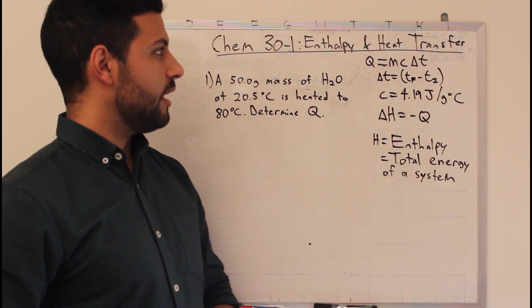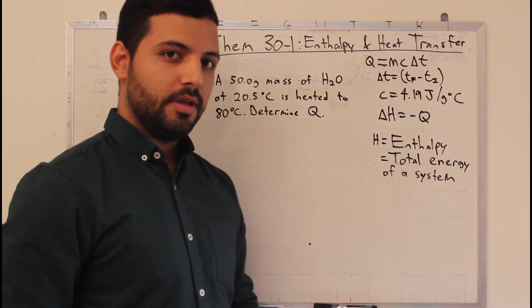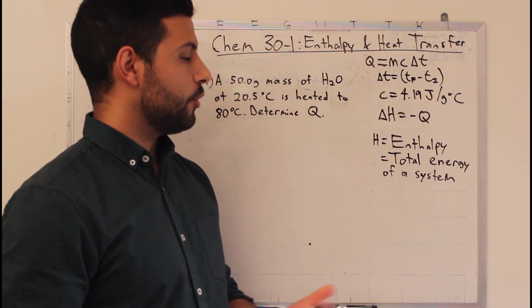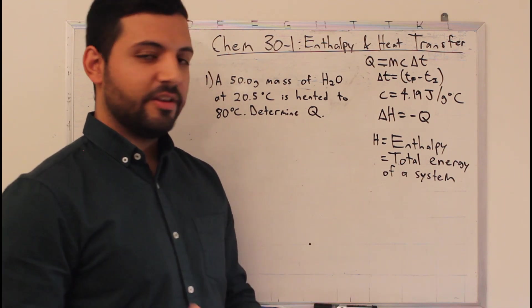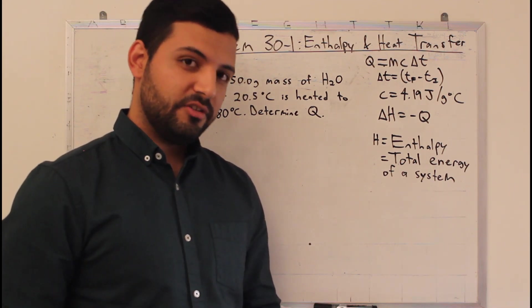In this lesson, Chemistry 30-1, we're going to go through enthalpy and heat transfer. We're going to go through a couple important concepts, mainly being the transfer of energy between and within a chemical system.